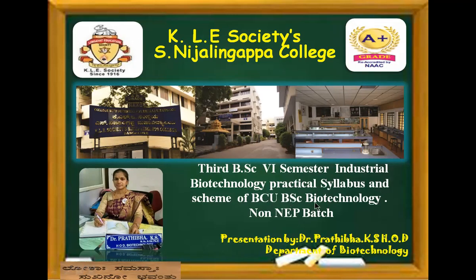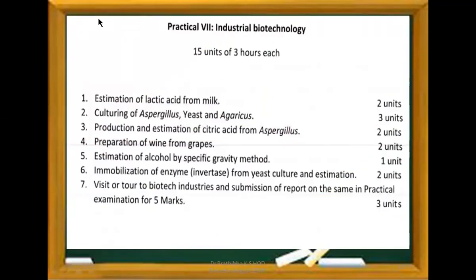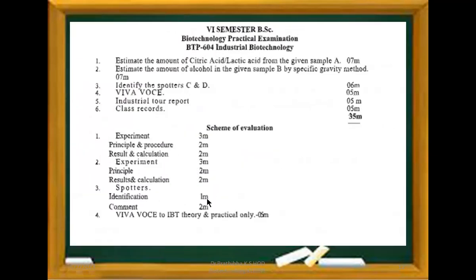Now for the 6th semester Industrial Biotechnology practical syllabus affiliated to Bangalore City University for the non-NEP batch: Experiment 1 — estimation of lactic acid from milk; Experiment 2 — culturing of Aspergillus, yeast and Agaricus; Experiment 3 — production and estimation of citric acid from Aspergillus; Experiment 4 — preparation of wine from grapes; Experiment 5 — estimation of alcohol by specific gravity method; Experiment 6 — immobilization of enzyme invertase from yeast culture and estimation. Experiment 7 is a visit to biotech industries and submission of a report, carrying 5 marks in the practical examination.